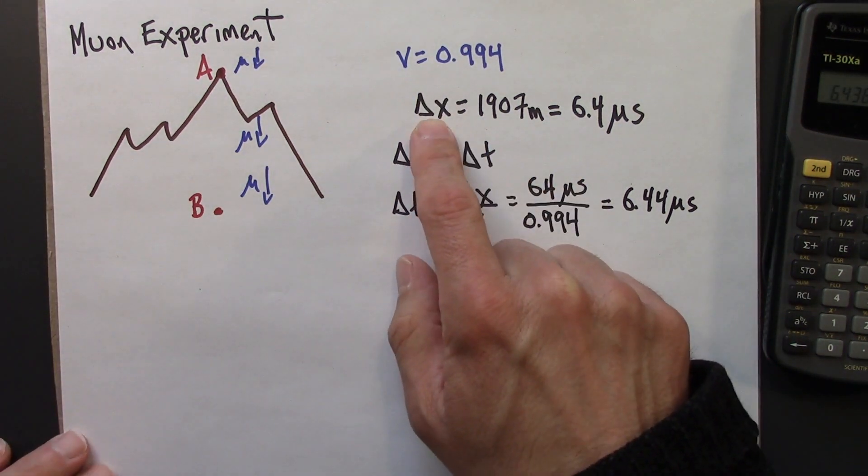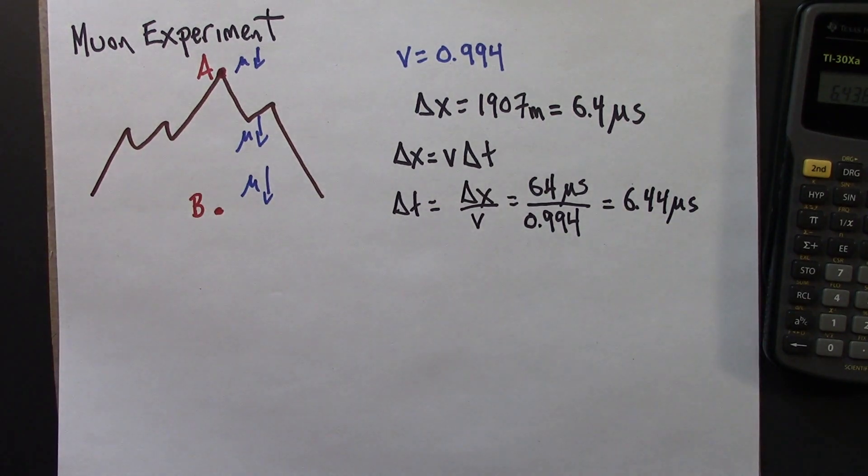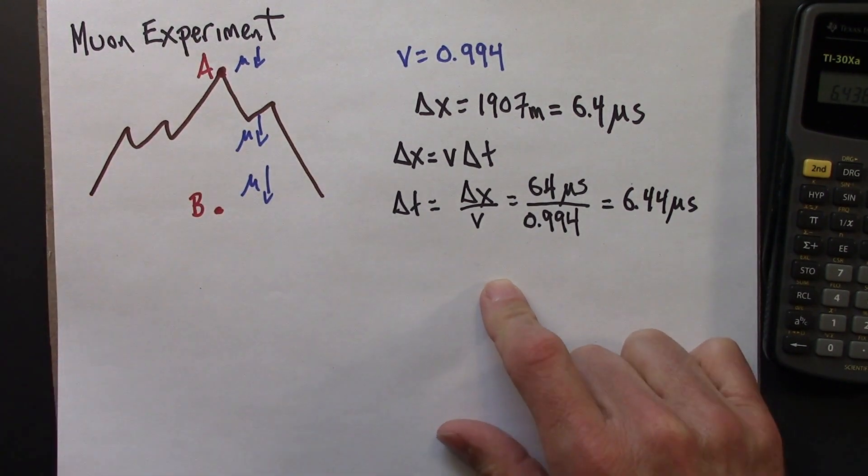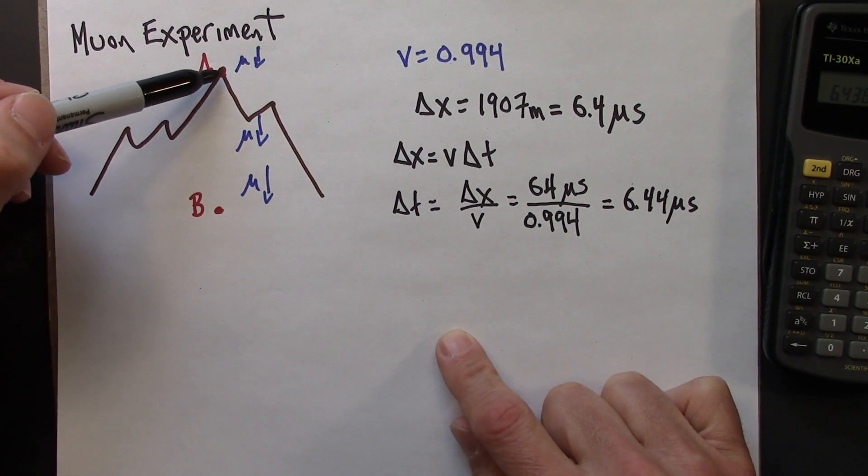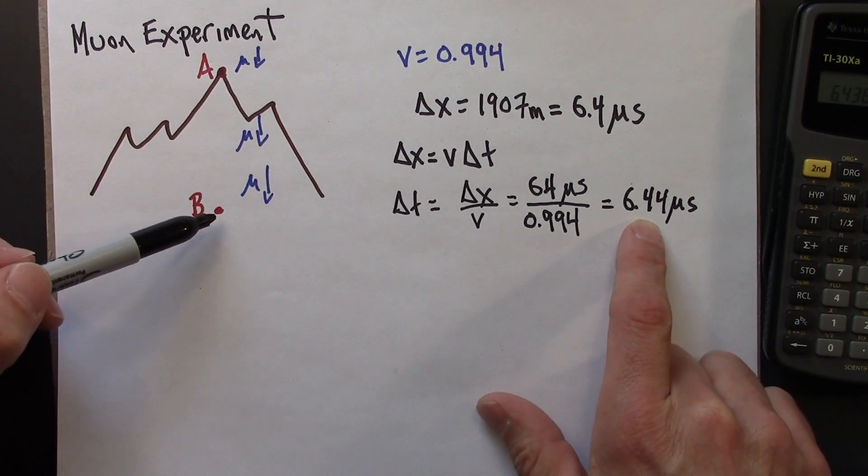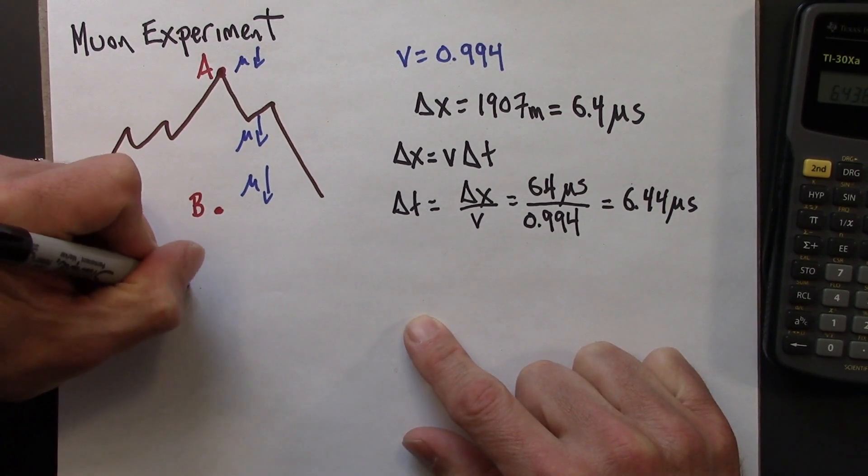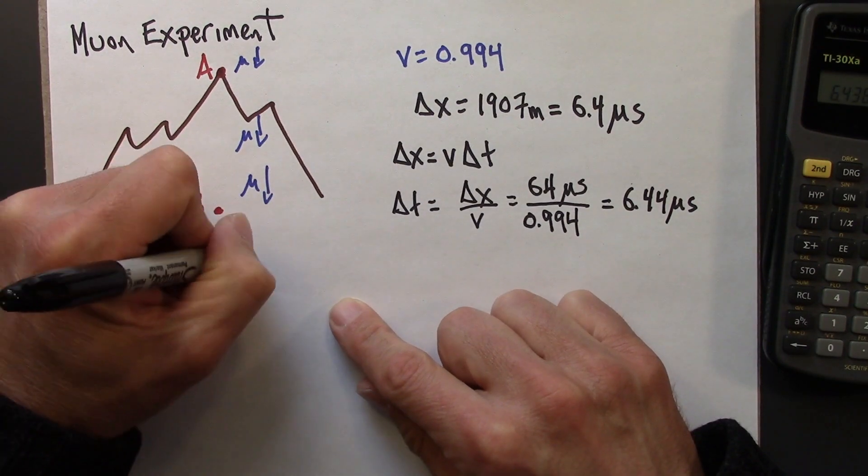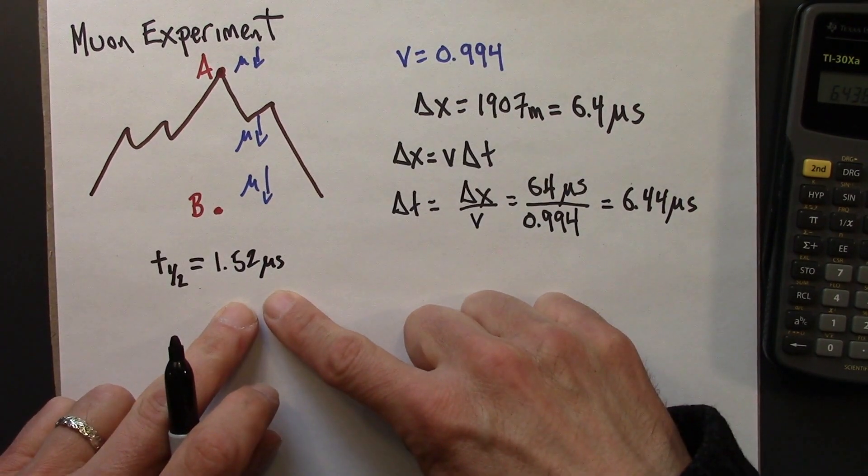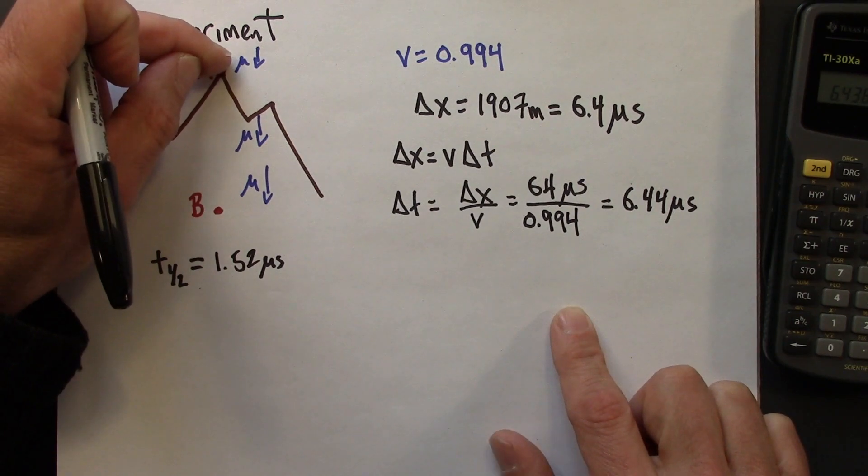So we have the spatial separation and the time separation between these two events. Let's analyze this situation from the point of view of us here on the Earth. We're at rest compared to the Earth. There's a muon here, and then 6.44 microseconds later, we'd expect this muon down here. But wait a minute. I know that the half-life for a muon is 1.52 microseconds. So this is like three or four half-lives.